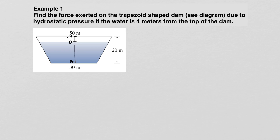In this example, I'm going to call the top of the water level zero, so the bottom will be 16, since the total height is 20 meters and the water is 4 meters from the top. Now, at a depth of x meters, we need to figure out what area the water is acting upon in terms of the force applied.